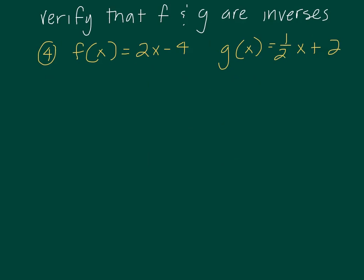So this problem, I'm verifying that f and g are inverses of each other. So if we look, f of x is 2x minus 4, g of x is 1 half x plus 2. This is one of those types of problems that it's really important that we're showing all of the work. So let's go ahead and try this out. So I'm going to do f of g of x to begin with. So that would become f of 1 half x plus 2.